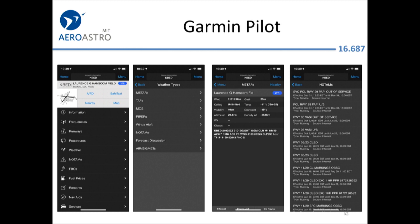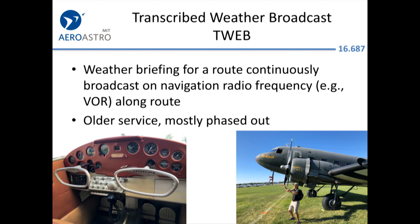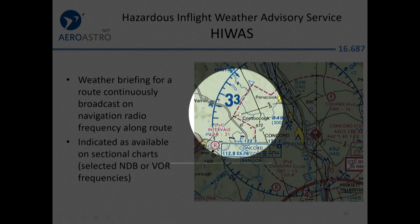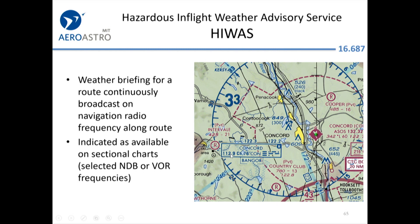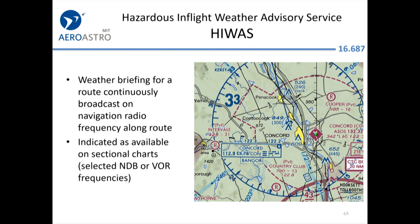In-flight weather sources: there's something called T-WEB, transcribed weather broadcasts — you might be asked about it on the exam. HIWAS is still broadcast off certain VORs indicated on the chart. The H symbol on a VOR tells you that if you tune in and tell your audio panel to listen, you'll hear pre-recorded weather announcements about thunderstorms in a certain area. You can call flight service en route — they're very helpful, they'll take a PIREP from you and tell you what's going on. They can even call your mom if you're going to be late due to headwinds.